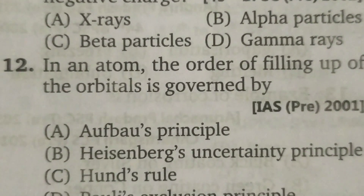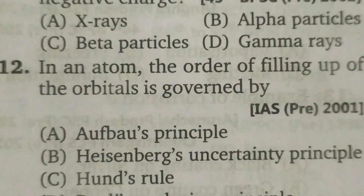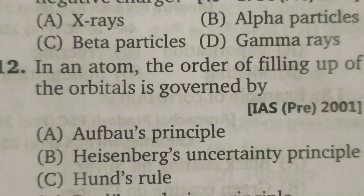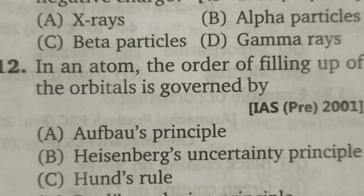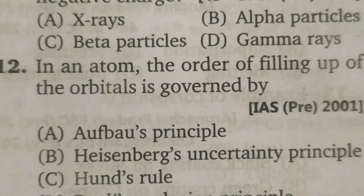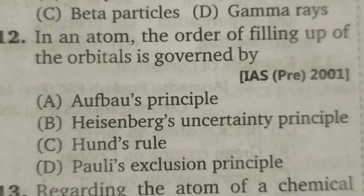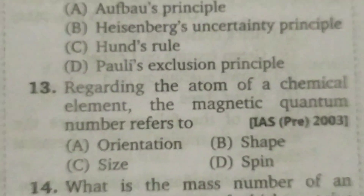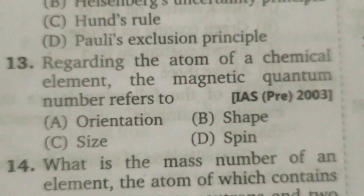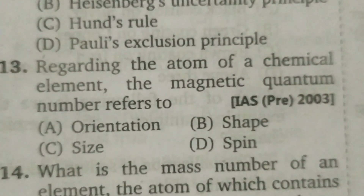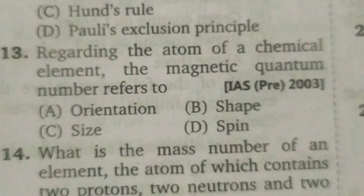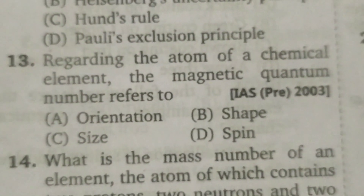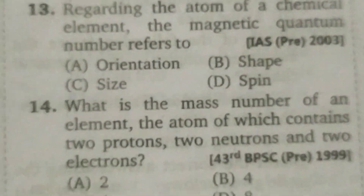In atom, the order of filling up of the orbitals is governed by Aufbau's principle. Regarding the atom of a chemical element, the magnetic quantum number refers to orientation.